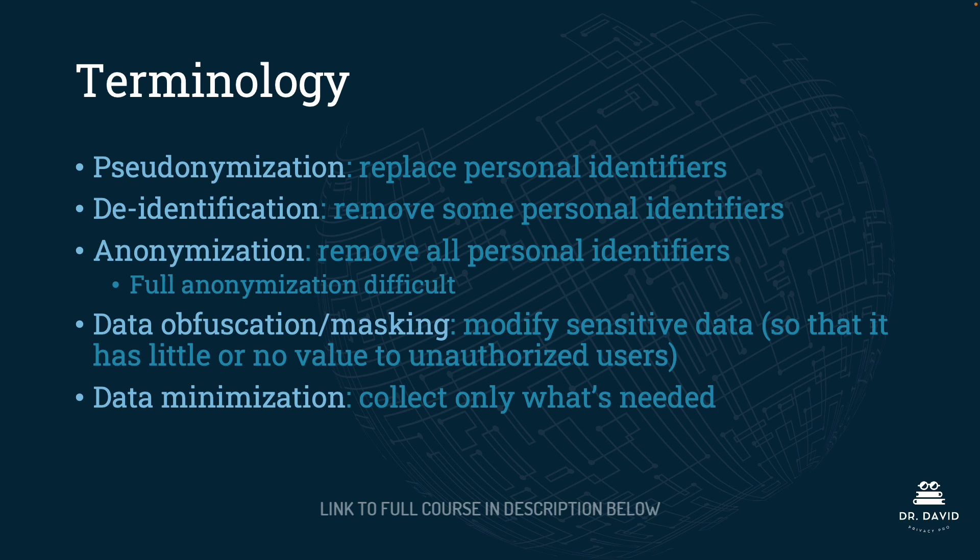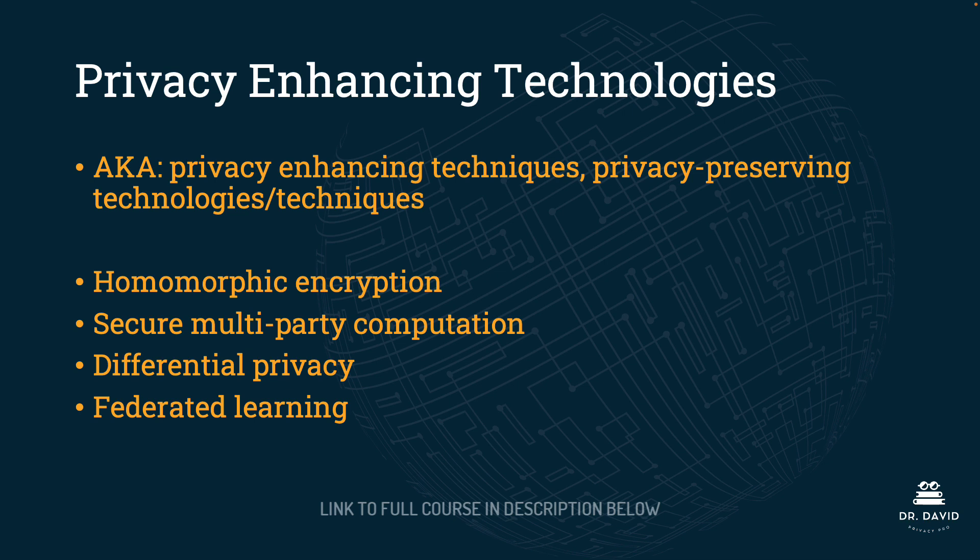All five of these are different privacy preserving techniques — we can pseudonymize a dataset, de-identify it, anonymize it, and do all of that to help preserve or protect privacy. When it comes to privacy enhancing technologies, there are four you need to know about for the AIGP exam. Just a quick note: depending on where you're reading online, you may see privacy enhancing technologies, privacy enhancing techniques, and privacy preserving technologies and techniques all used synonymously.